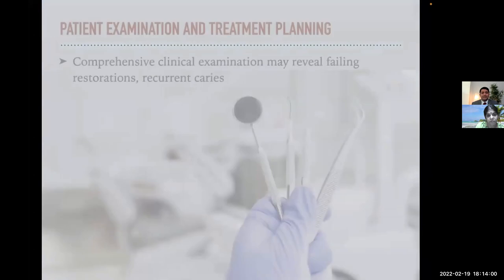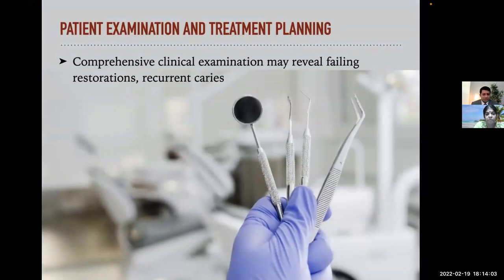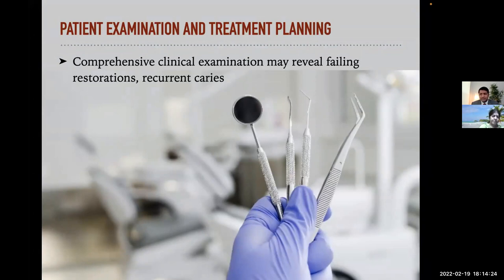Before we start aesthetic dental treatment, we must examine the patient and our approach should be holistic. A comprehensive clinical examination is necessary, which may reveal failing restorations, recurrent decay, parafunctional habits, age considerations, and proper shade selection. You should have proper light — there are nice lights, like smile line lights, you can use those. Vita shade guides can also be used.